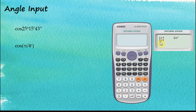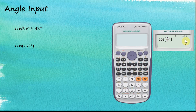We have three options: the first is degree, the second is radian, and the third is gradient. In this case we choose radian, option 2. We can see the little 'r' indicator showing this is radian. Now close the bracket and press equal to get the answer. The answer is displayed in fractions; to convert to decimal, use the S→D button.